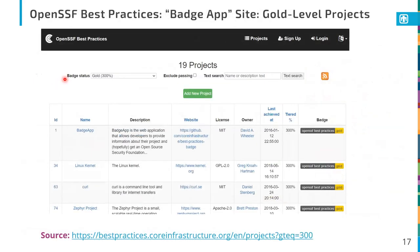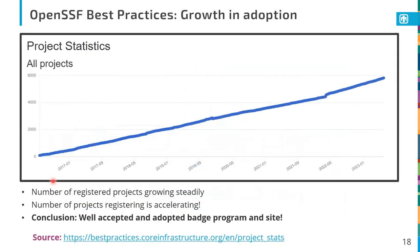With badge status, you can select and filter by different levels. For example, there are currently 19 gold level projects as of last week. The badge app itself is one of them. Very comfortingly, the Linux kernel is listed as gold, as is curl. Looking at the growth of the best practices site, a chart shows the number of registered projects going back to 2016 when it was first created, and it's been growing very steadily over the last six or seven years, even accelerating recently in the last year or so. This shows it's a well-accepted and adopted badge program.